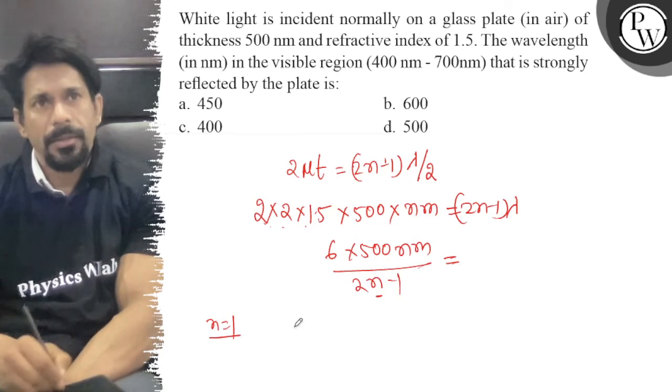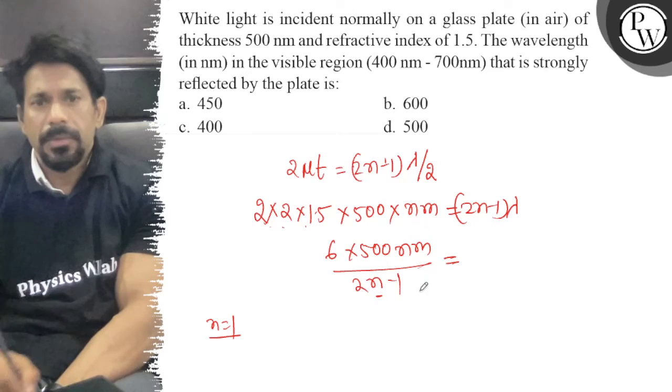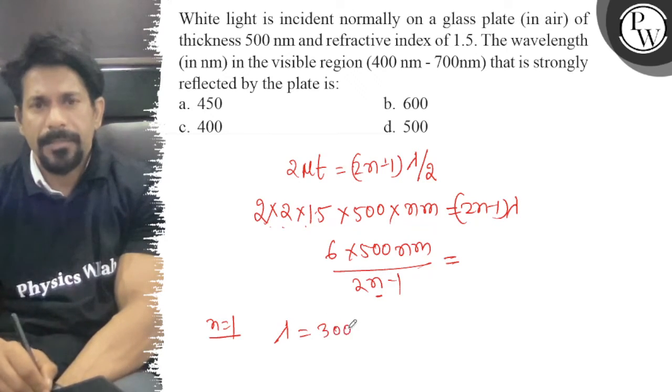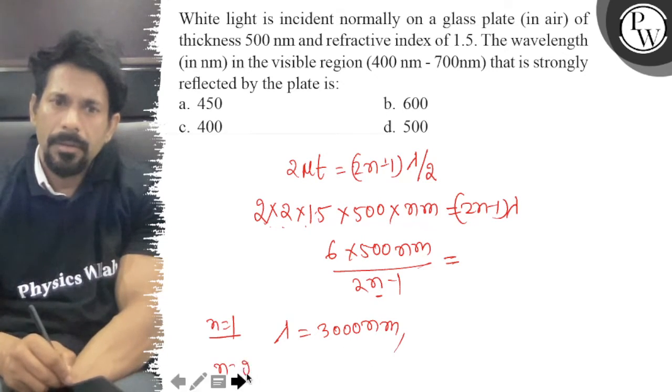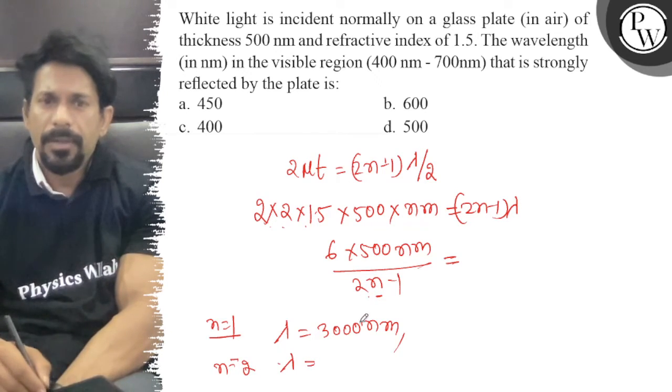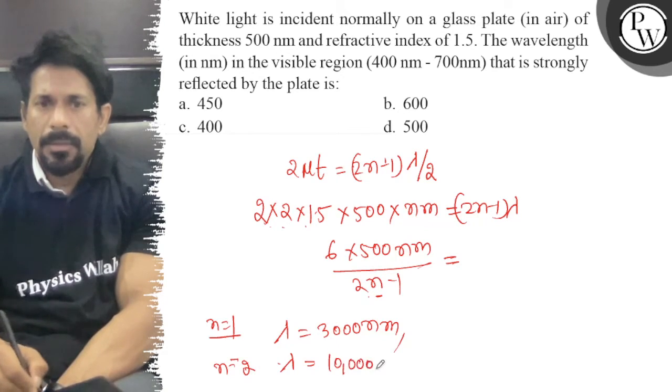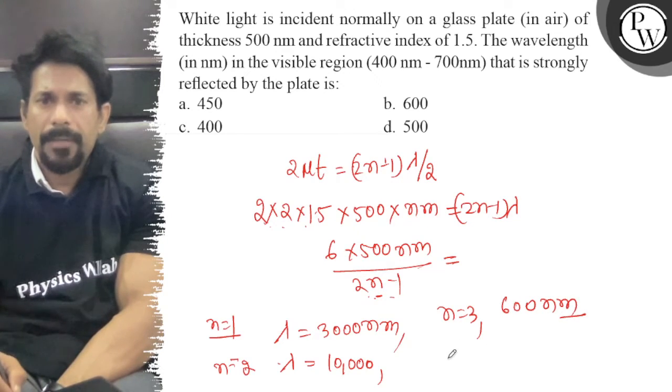If n is equal to 1, then the value of lambda is equal to 3000 nm, so this is out of range. For n equals 2, the value is also out of range. Then for n equals 4, the value is not coming in our range.